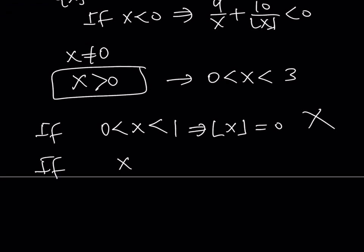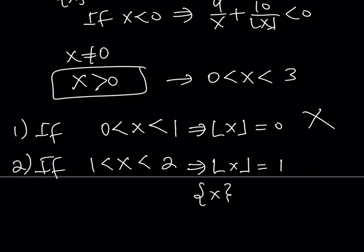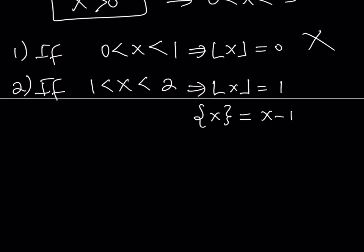Case 2: what if x is between 1 and 2? If x is between 1 and 2 — something like 1.5, 1.2, 1.09 — the floor value of x is going to be 1. And the fractional part is x minus the floor value, so it equals x minus 1. Our equation then becomes 8 over (x minus 1) equals 9 over x plus 10, and we solve this under the condition that x is between 1 and 2.